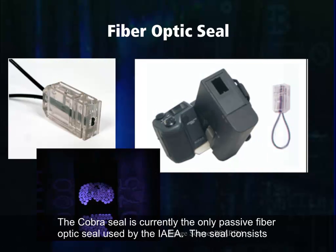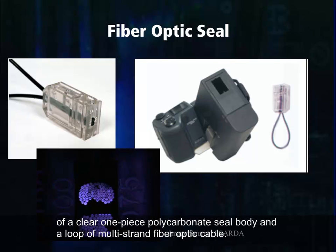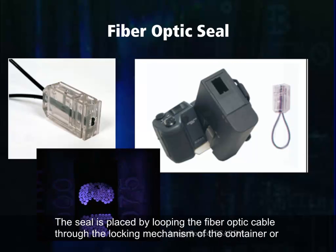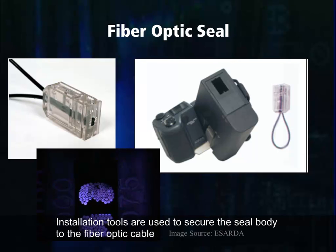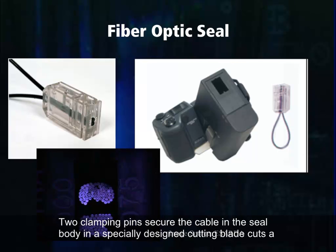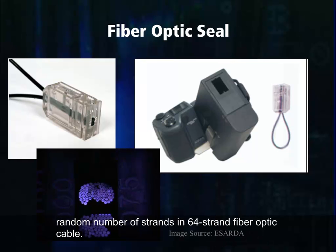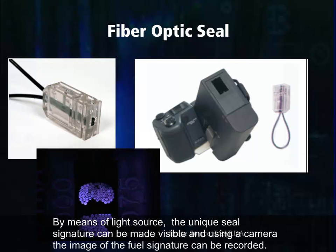The COBRA seal is currently the only passive fiber optic seal used by the IAEA. The seal consists of a clear one-piece polycarbonate seal body and a loop of multi-strand fiber optic cable. The seal is placed by looping the fiber optic cable through the locking mechanism of the container or site to be sealed and then inserting the cable ends into the seal body. Installation tools are used to secure the seal body to the fiber optic cable. Two clamping pins secure the cable in the seal body, and a specially designed cutting blade cuts a random number of strands in the 64-strand fiber optic cable. By means of a light source, the unique seal signature can be made visible, and using a camera, the image of the seal signature can be recorded.